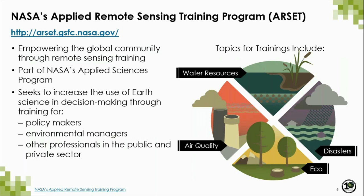The Applied Remote Sensing Training Program, or ARSET, is under the umbrella of the Capacity Building Program of NASA, which is under the Applied Sciences Program. The purpose of the NASA ARSET Program is to help build the skills to acquire and use available NASA satellite and model data for decision support. We provide in-person and online trainings intended for policymakers, academia, NGOs, and other applied science professionals who want to incorporate NASA remote sensing techniques and tools into their daily activities. We provide introductory, intermediate, and advanced trainings on a variety of topics within the areas of air and water quality, disasters, land, and water resources.